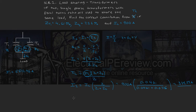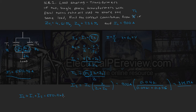Lastly, we can check our work. Since IL equals I1 plus I2, if we add both transformer currents — I1 equals 550.46 amps and I2 equals 349.53 amps — we get IL equals 899.99 amps, which equals our load current of 900 amps. This checks out perfectly.